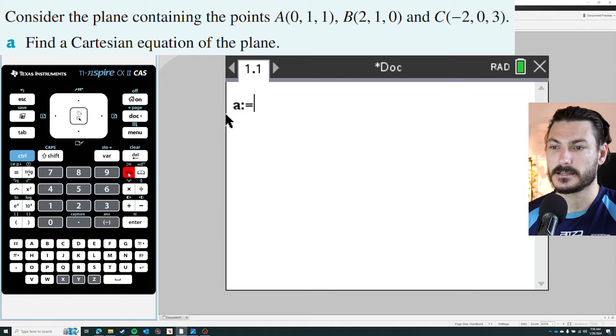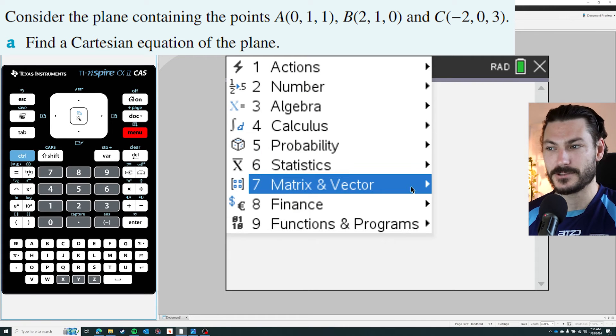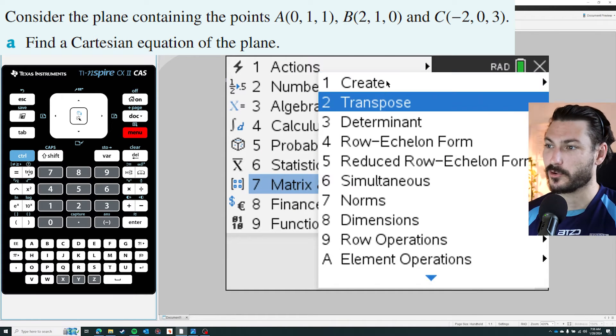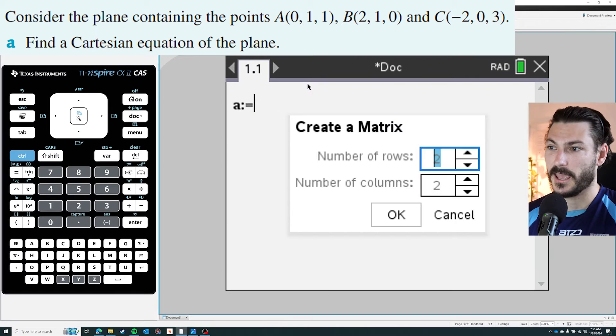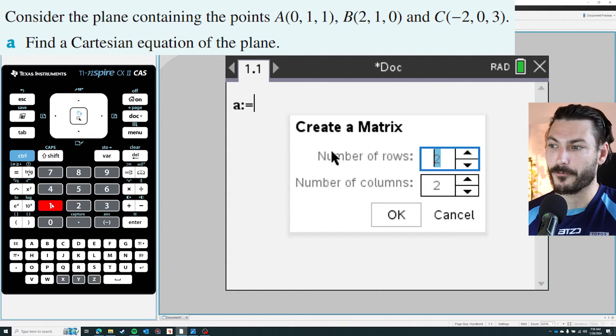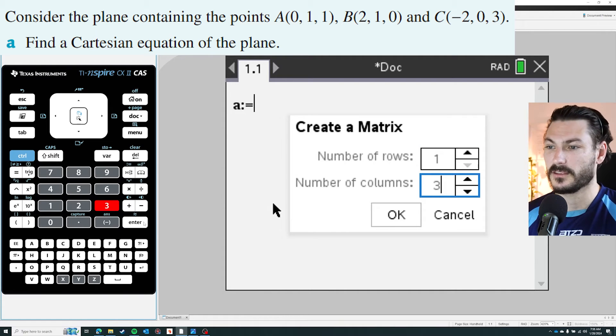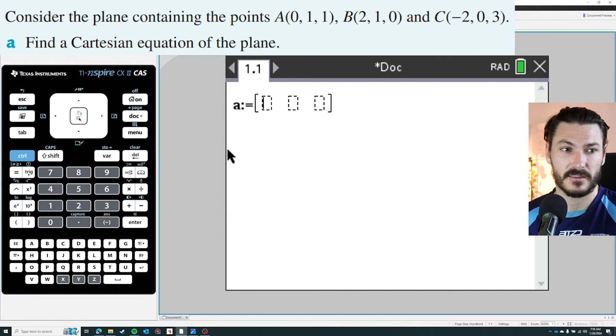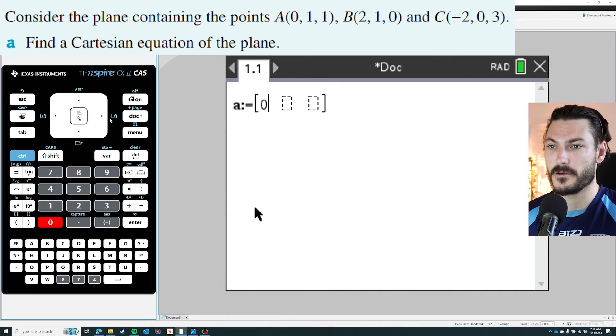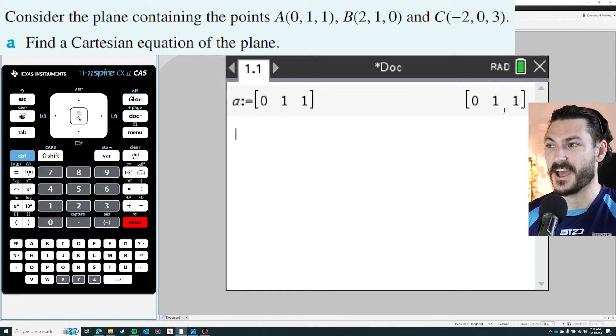On the calculator a vector is just a row matrix. So the long way is to go menu, then matrix and vector, and then create, and then matrix. And then you can go, well I want one row and our three-dimensional vectors, tab to go down is three columns, and then you can hit okay and that'll give you the template for it. And then for example vector a is zero, one, and one, and hit enter and that's going to define a as that vector.